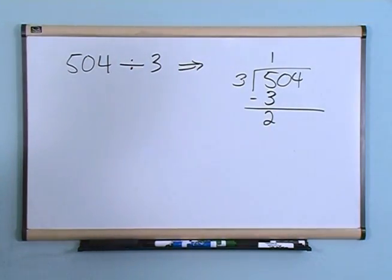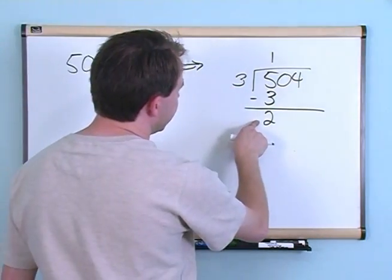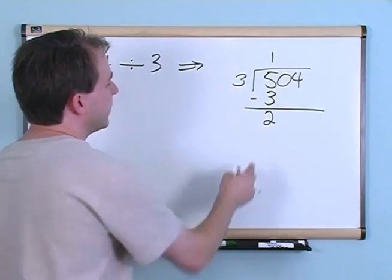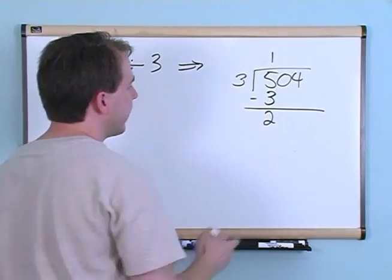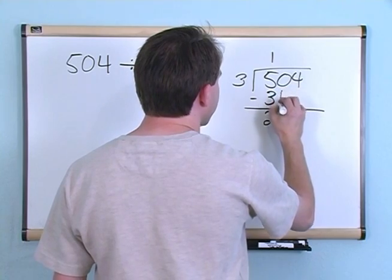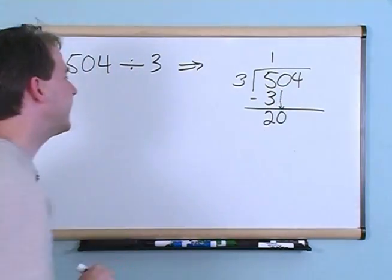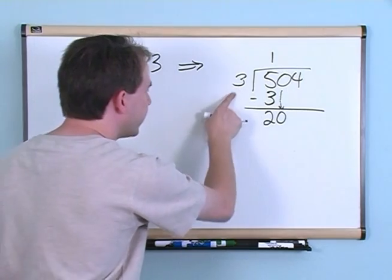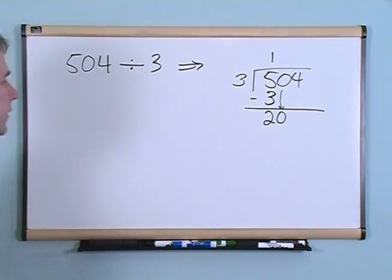Now I ask myself, can 3 be divided into 2? Well, no, it can't because 2 is smaller than 3. So I'm going to drag this 0 down and make it bigger. Now I can do that. I can take 3 and divide it into 20.